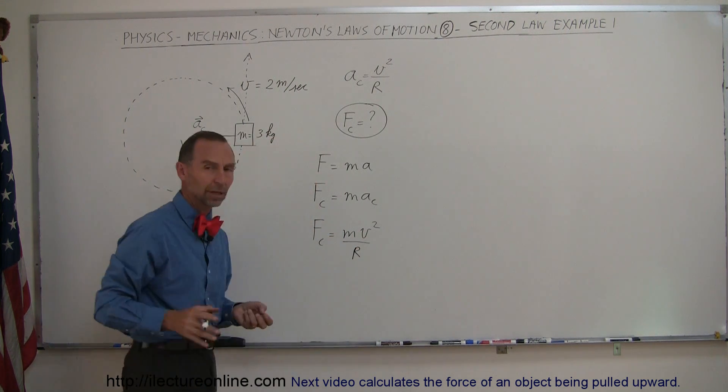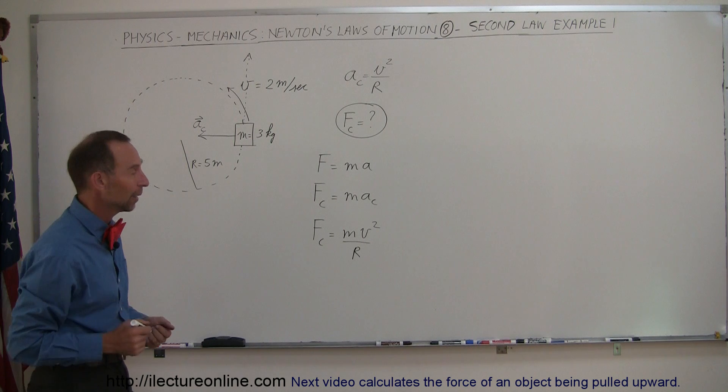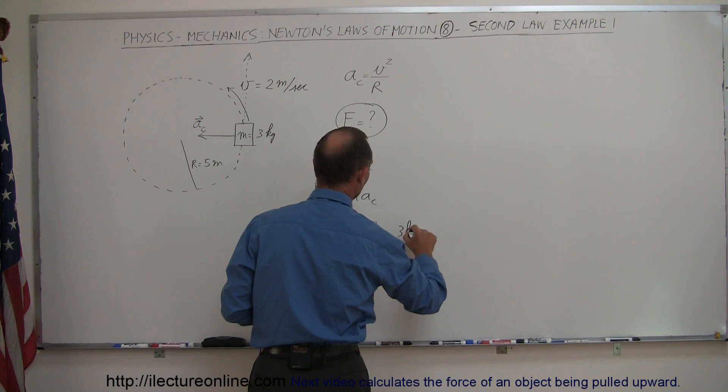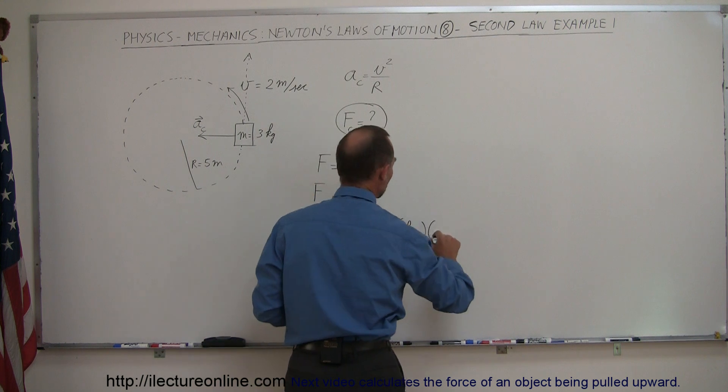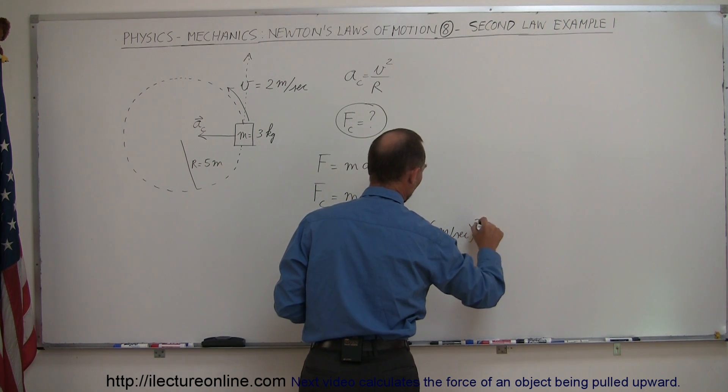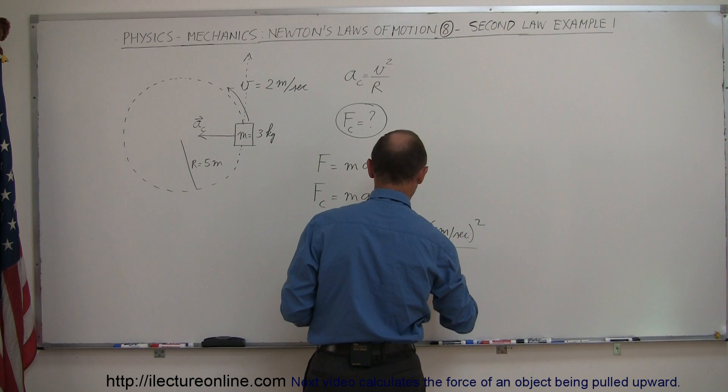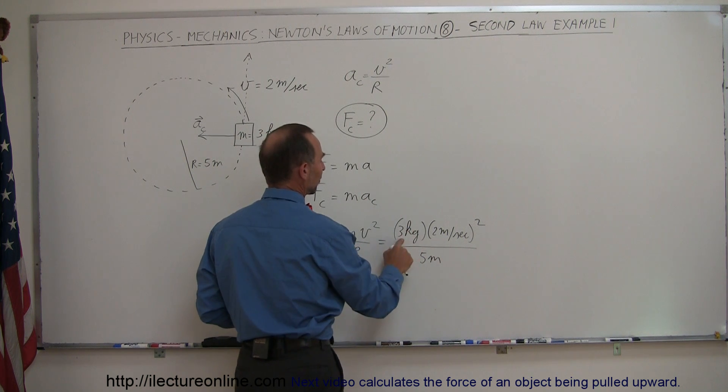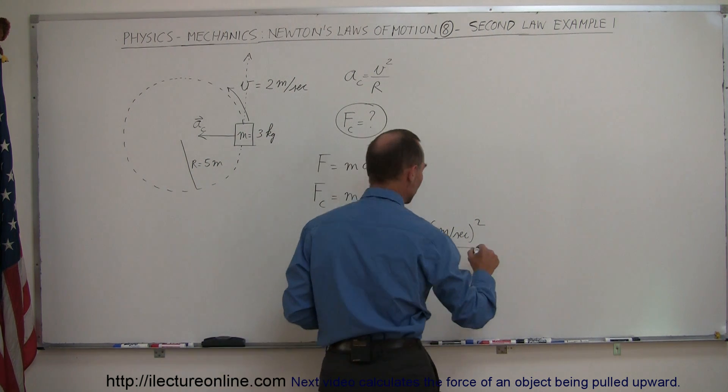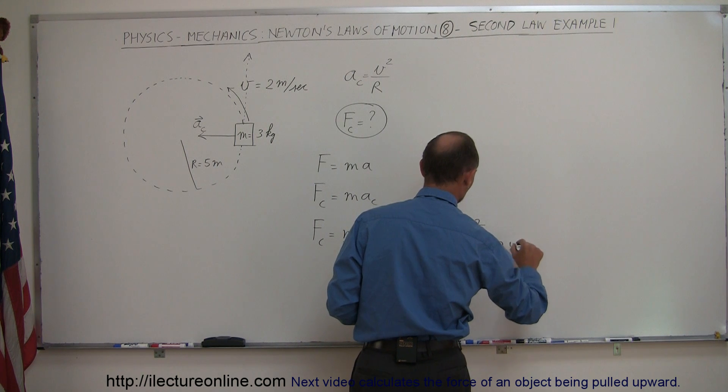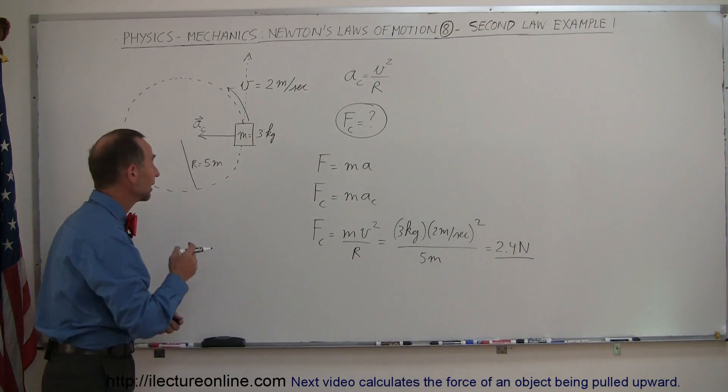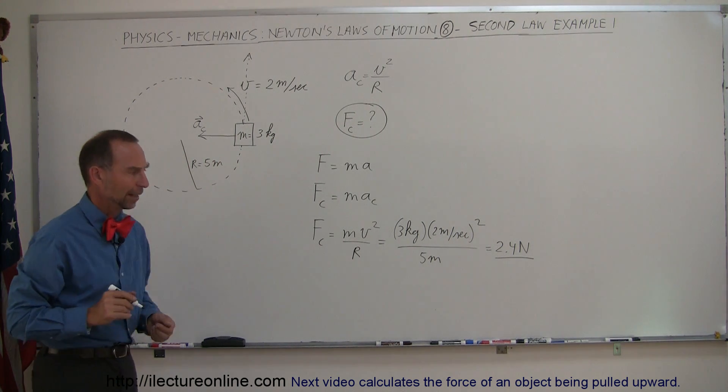So, all we have to do now is plug in the mass, the radius, and the velocity, and we find out what the force is. So, in this case, we have a mass of 3 kilograms, a velocity of 2 meters per second. We have to square that, and we divide that by the radius of 5 meters. So, 2 squared is 4, 4 times 3 is 12, divided by 5 is 2.4. So, it would be 2.4 Newtons, and that would be the force required to keep the object going around in a circular path.